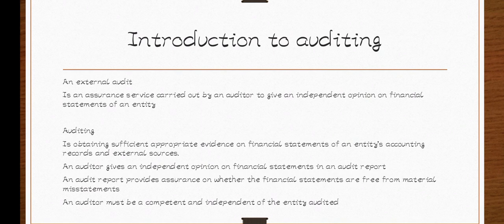We shall start by defining what an external audit is. Auditing is an assurance service — you are giving someone assurance that what they did is right. If what they did is right you assure them, and if what they did is wrong you tell them. Auditing is an assurance service carried out by the auditor to give an independent opinion — an opinion that is not influenced by anyone else.